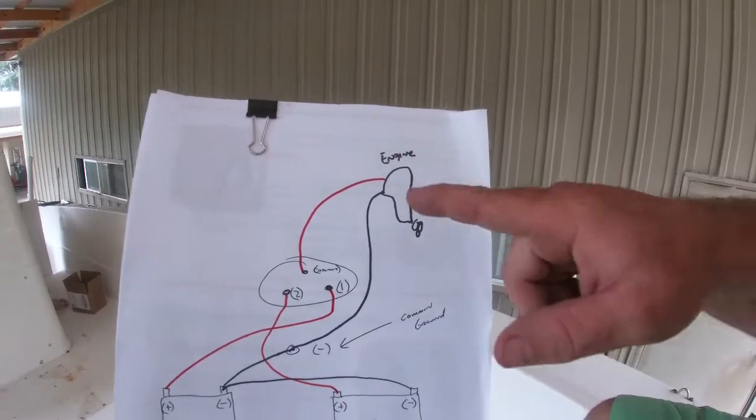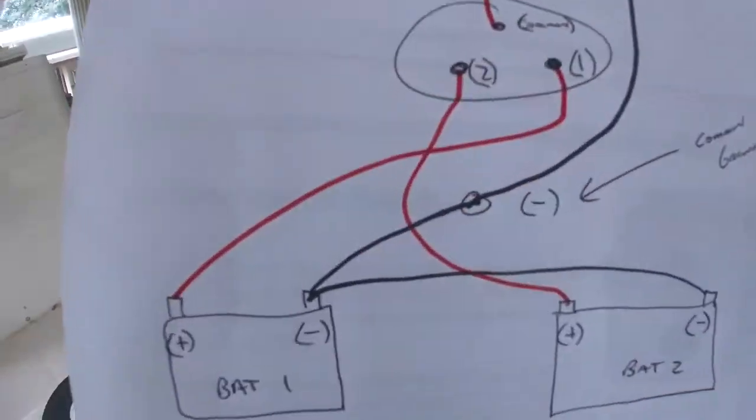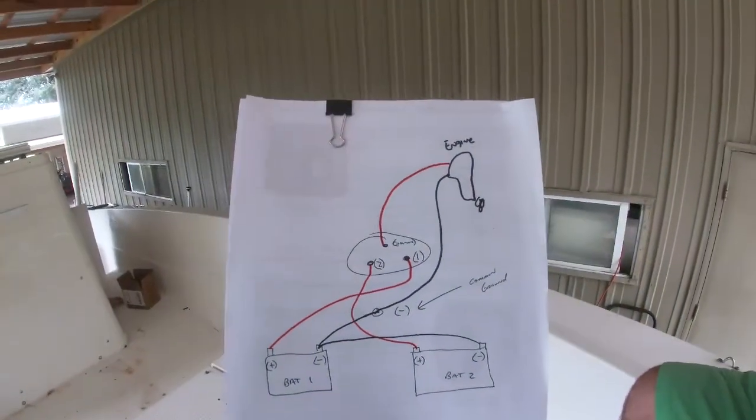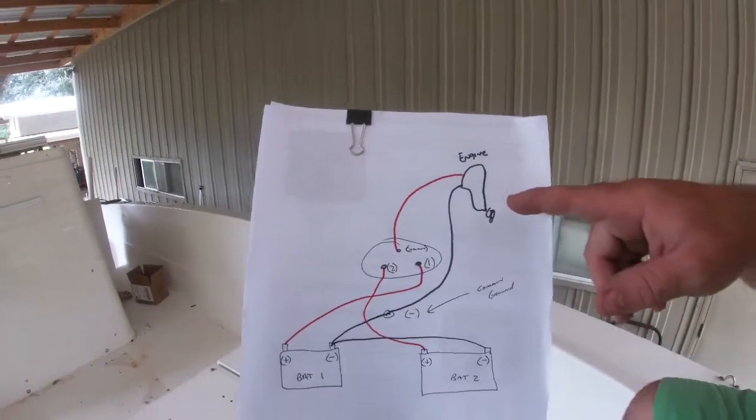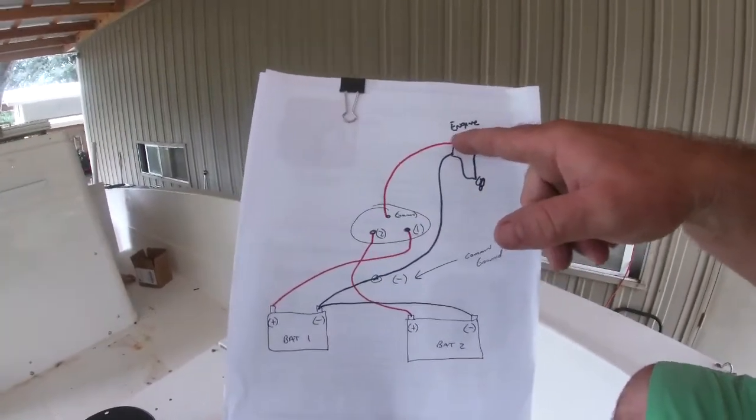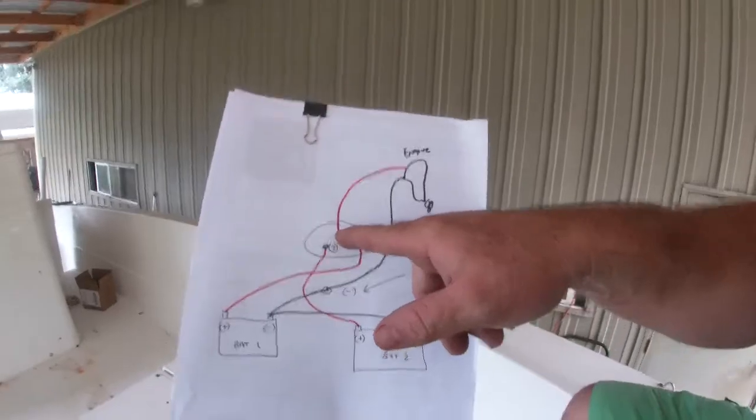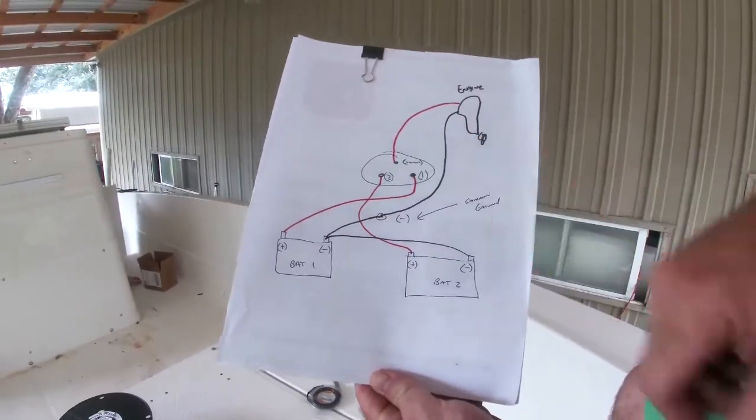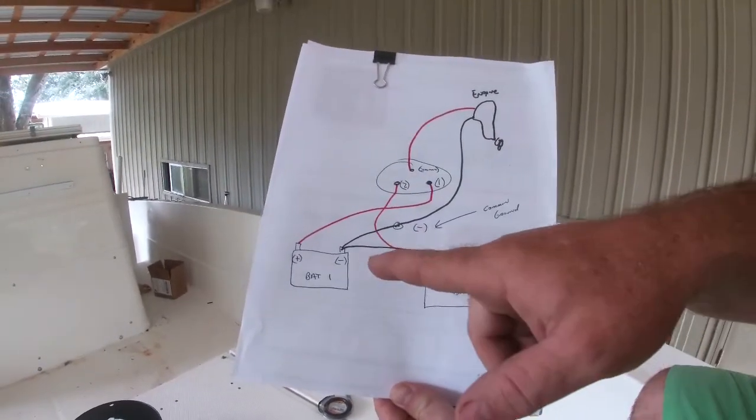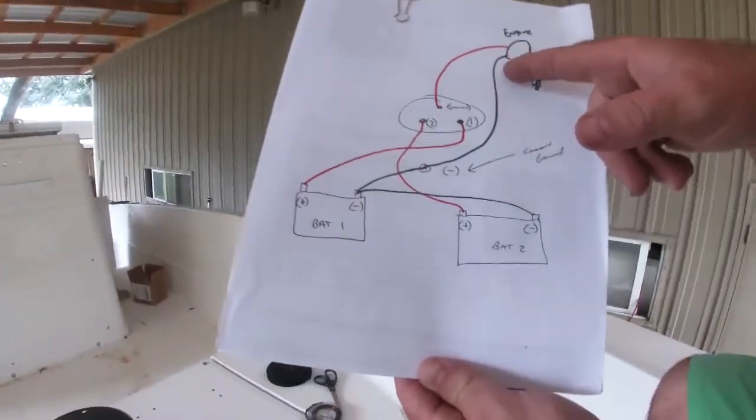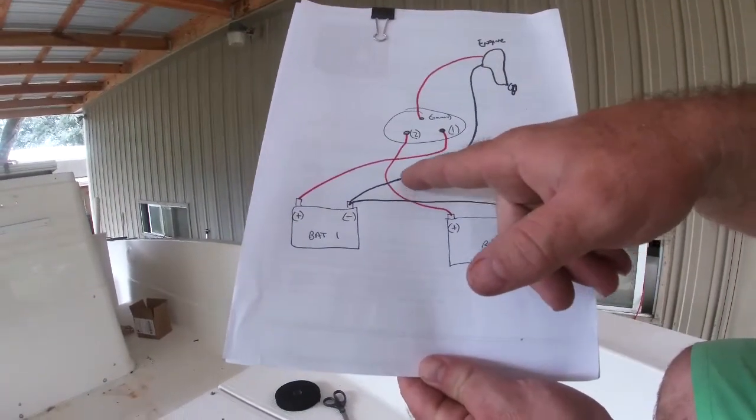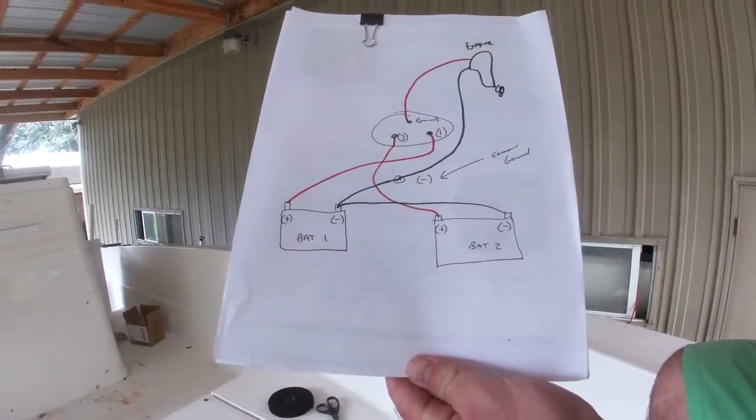So what we're going to do is we're going to establish a common ground, which is right here. So we're going to go from the engine straight to the common. That's going to be your first lead. Then we got your ground from your engine. That's going to go all the way to the common ground, which I'll show you what the common ground is when we get done with this.